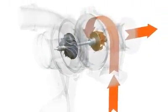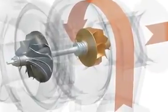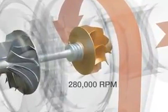This exhaust gas is channeled to the turbo where it spins a turbine wheel. This highly engineered wheel spins quite fast, reaching speeds of up to 280,000 rpm.